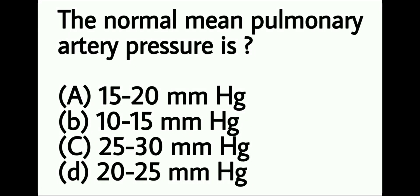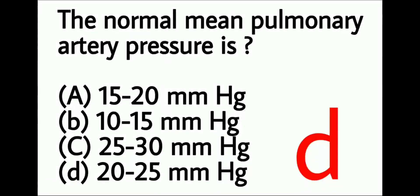Next question: The normal mean pulmonary artery pressure is — option A: 15 to 20 mmHg, option B: 10 to 15 mmHg, option C: 25 to 30 mmHg, option D: 20 to 25 mmHg. According to the options, the right choice is option D: 20 to 25 mmHg.